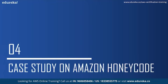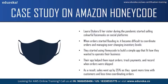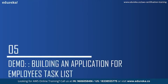Let us now look at a case study on Amazon Honeycode. Laura Otalora and her sister started selling colorful face masks through social channels like Instagram and Facebook. When orders started flooding in, it became difficult to stay organized while coordinating orders across multiple social accounts and managing inventory across the US and Colombia. They tried emailing spreadsheets back and forth, which caused confusion and wasted time. They built a simple Honeycode application to input orders, track payments, and record shipments. As a result, sales went up 25% because they could spend more time with customers and less time coordinating orders.